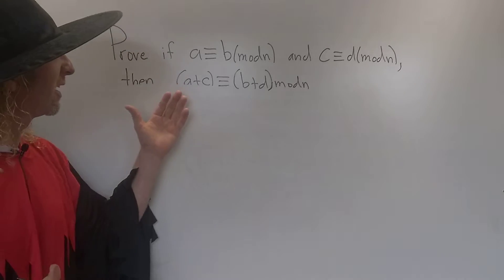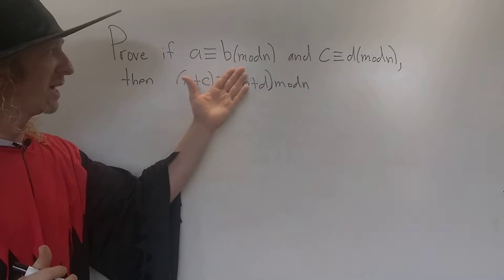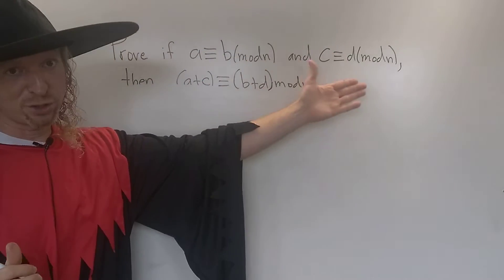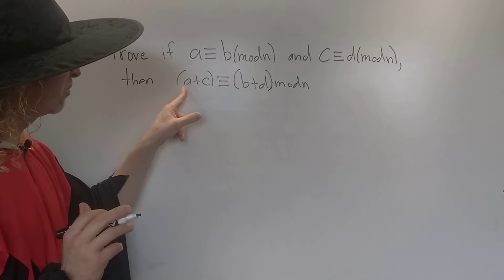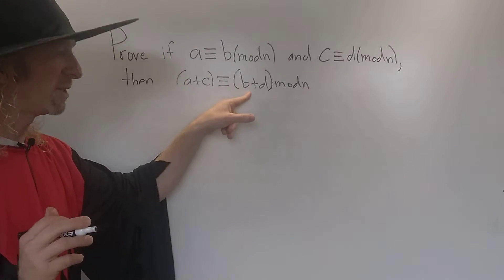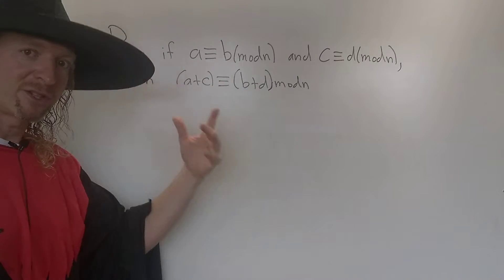In this problem, we're going to prove that if A is congruent to B modulo N and C is congruent to D modulo N, then A plus C is congruent to B plus D modulo N.